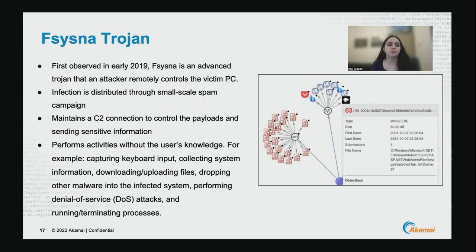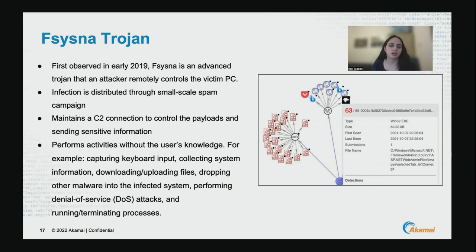First observed in early 2019, F-Cisna is an advanced Trojan that allows an attacker to remotely control the victim PC. The infection is distributed through a small-scale spam campaign and maintains C2 communication to control payloads and send sensitive information. It can perform activities without the user's knowledge — for example, it can capture keyboard input, collect system information, download and execute files, and many more malicious operations.